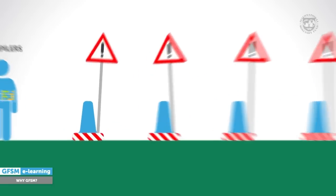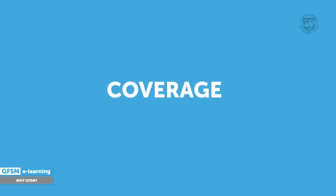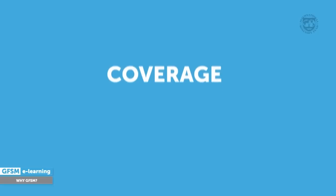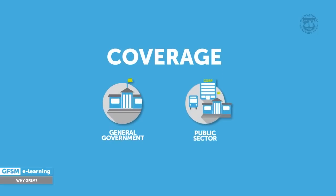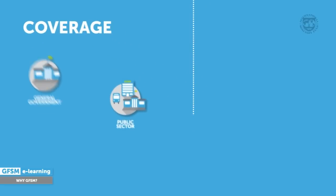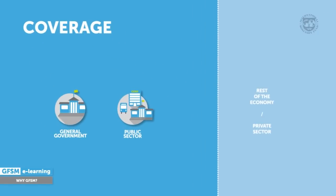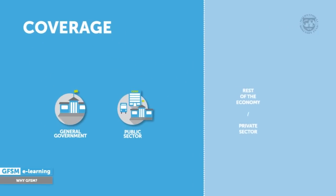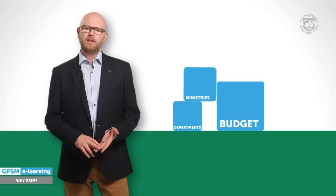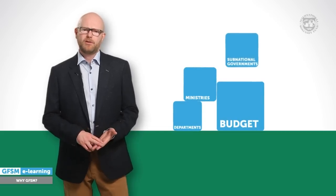The first challenge is coverage. We need to decide which units form the government, or more precisely, the general government and the public sector. Where should we draw the line between general government and the rest of the economy, or between the public and the private sector? You may think that shouldn't be so hard — you take the budget, the departments, the ministries, add the sub-national governments and you're done. But in practice, there are typically many other units to consider.